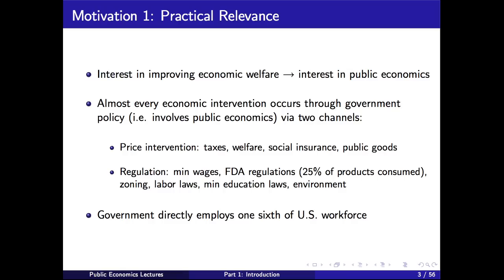Government intervention involves public economics through two channels. First, price interventions: taxes, welfare programs, social insurance, and the provision of public goods — these are ways the government changes prices in the economy. For instance, a carbon tax makes polluting more costly to help the environment. Any issue like environmental economics ultimately has a public economics aspect. The second domain is regulation: minimum wages, FDA regulations, zoning laws, labor laws — all of these involve government and the type of analysis we'll discuss.